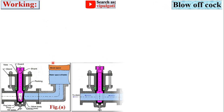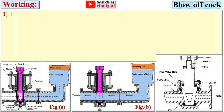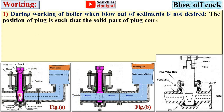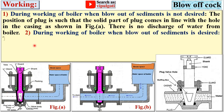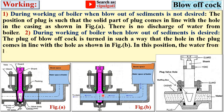Now the working of the blow-off cock. Consider figure A and figure B to understand the working. During working of the boiler, when blow-out of sediments is not desired, the position of the plug is such that the solid part of the plug comes in line with the hole in the casing, as shown in figure A. There is no discharge of water from the boiler. When blow-out of sediment is desired, the plug is turned such that the hole in the plug comes in line with the hole, as shown in figure B.